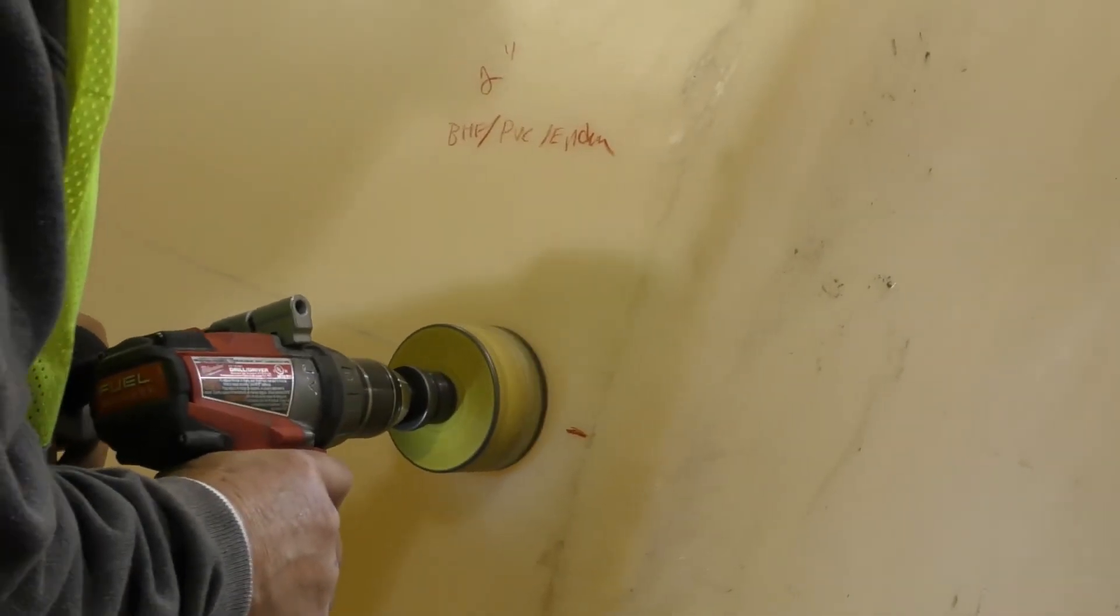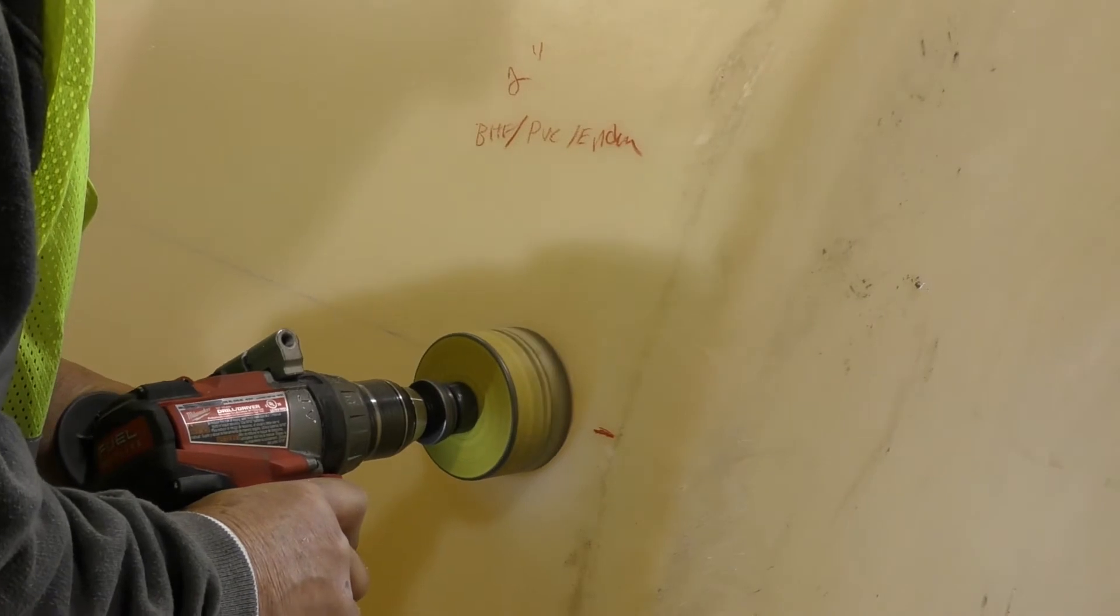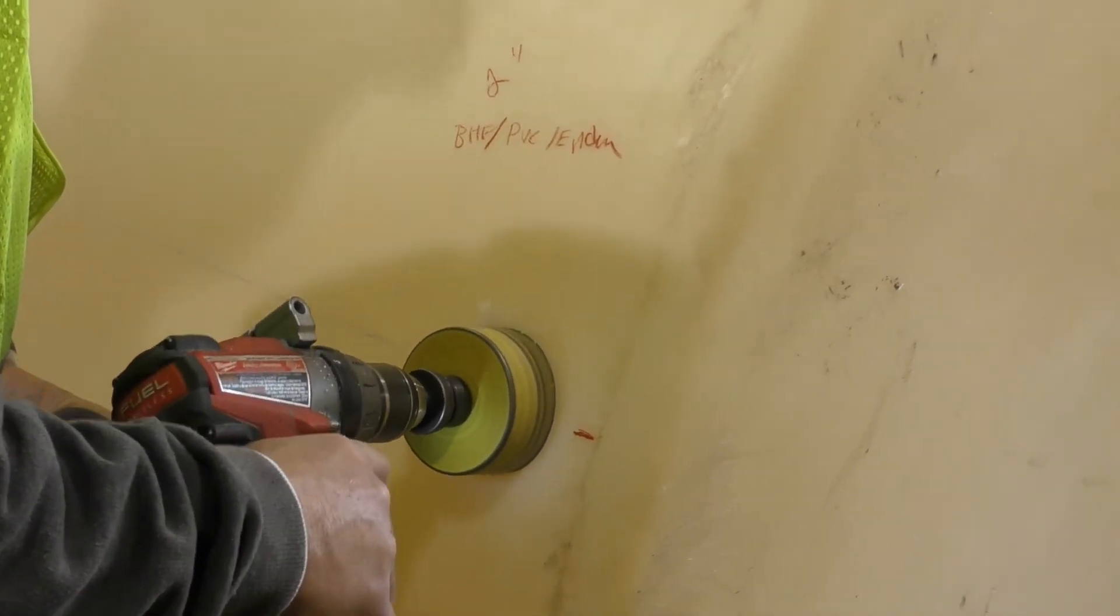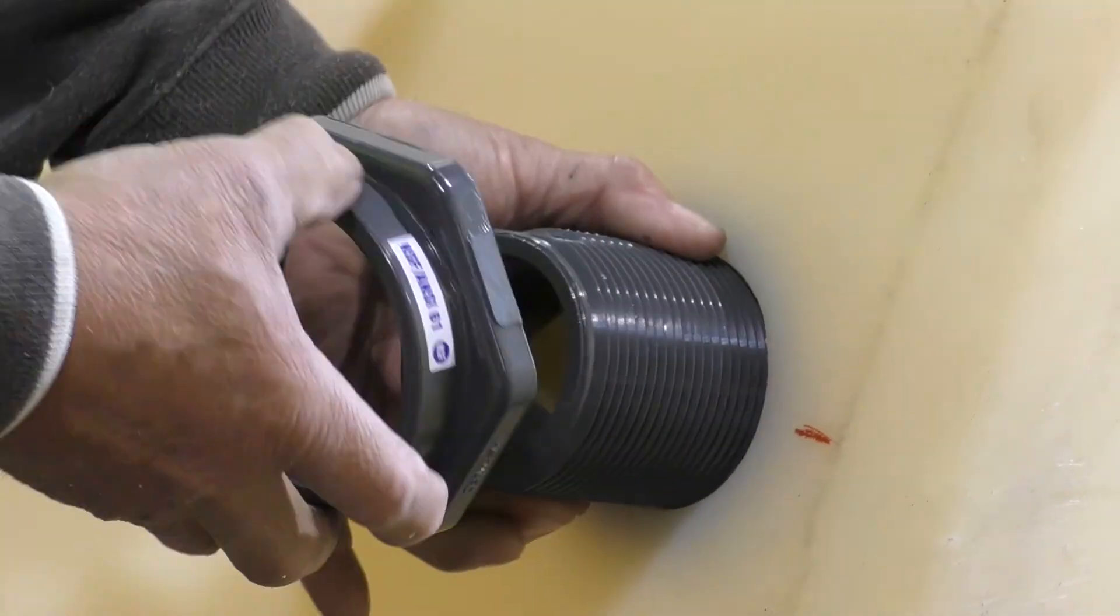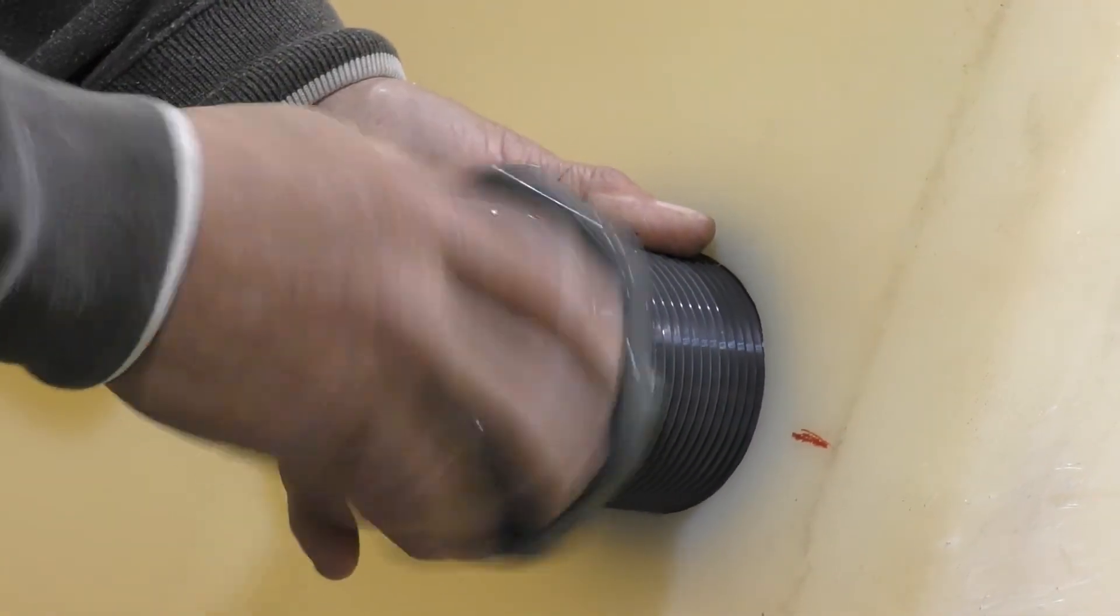Here we are installing a 2-inch PVC bulkhead fitting to be used as a drain. Note that these fittings are designed for sidewall applications on tanks that are 3,000 gallons or less. These fittings can also be used on the dome of the tanks.